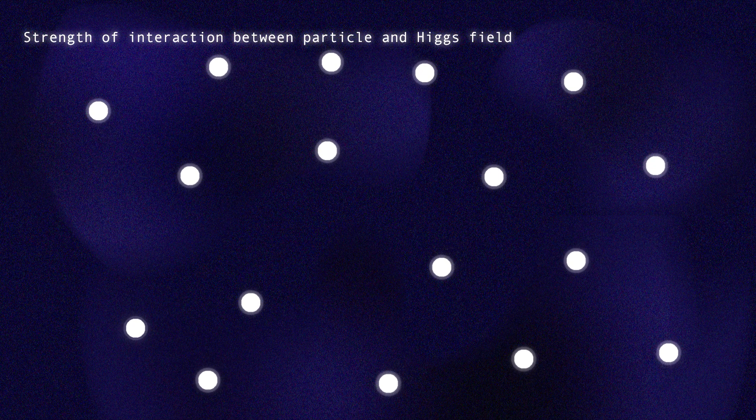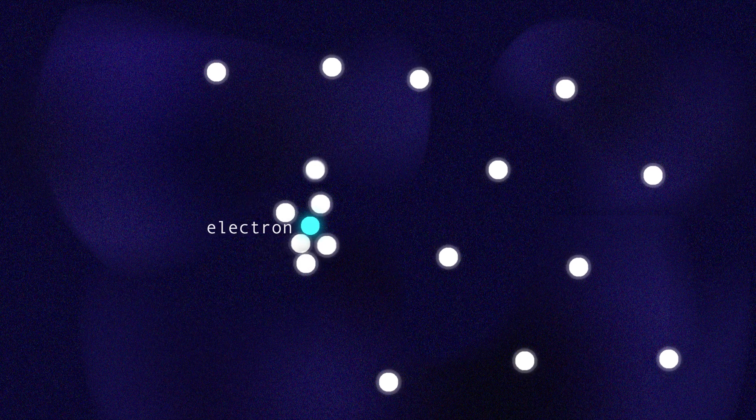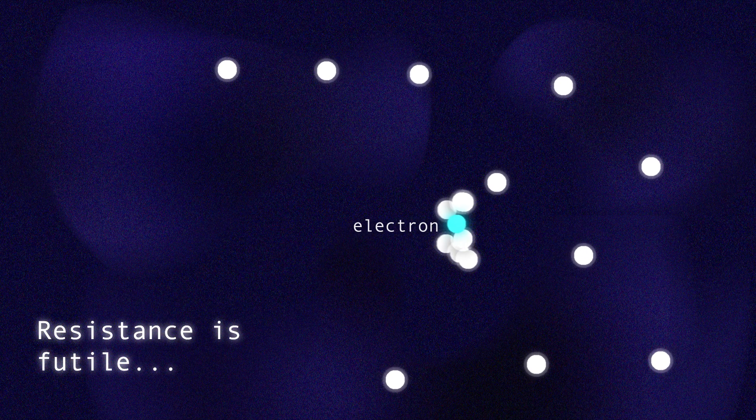When a particle interacts with the Higgs field, it experiences resistance to acceleration to the speed of light, giving it mass.